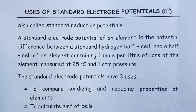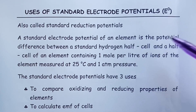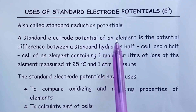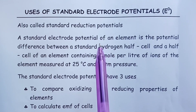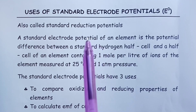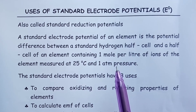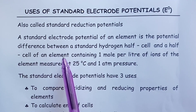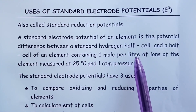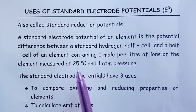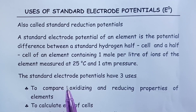Uses of standard electrode potentials, symbolized as E naught. Standard electrode potentials are also called standard reduction potentials. A standard electrode potential of an element is the potential difference between a standard hydrogen half cell and a half cell of an element that contains one mole per liter of ions of the element, measured at 25 degrees Celsius and one atmosphere pressure.